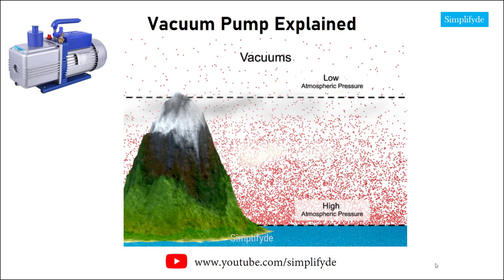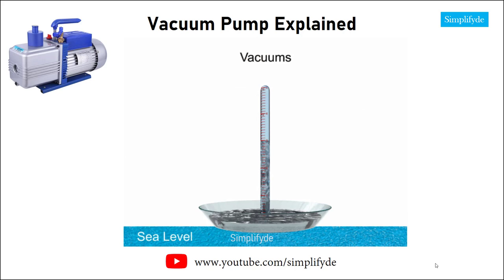The maximum force available from a vacuum is dependent on the barometric pressure at its location. At sea level, the barometric pressure is about 14.7 pounds per square inch under standard conditions. A vacuum can be thought of as negative air pressure and is measured with any set of force-per-area units. In the customary U.S. system of units, atmospheric pressure and vacuum pump force are measured in inches of mercury, abbreviated Hg, which is the atomic symbol of mercury.